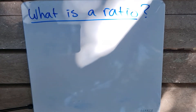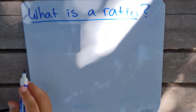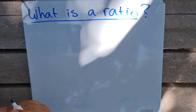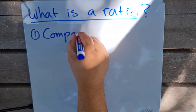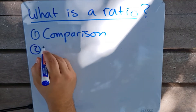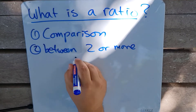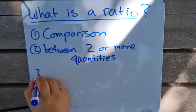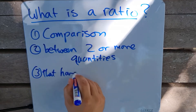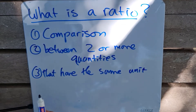Hi guys and welcome to today's video. As you can see, I am sitting outside. We are asking the question today: what is a ratio? Now we have done ratio in a few examples and you've seen this term thrown around, but maybe you're still not quite sure what a ratio actually is. Number one, a ratio is a comparison. Number two, between two or more quantities.